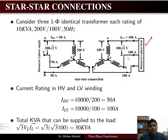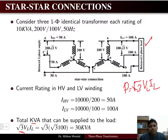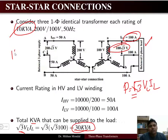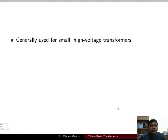The total kVA supplied to the load is given by the three-phase power formula: √3 × V_line × I_line. The line voltage on the secondary is 100√3 V and the line current is 100 A, so the output is 30 kVA. Since we have three 10 kVA single-phase units, 10 × 3 = 30 kVA on the load side.